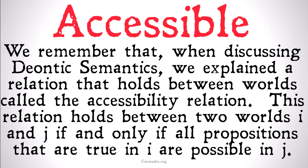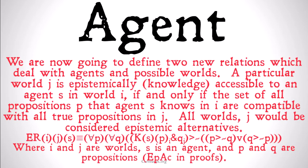For doxastic and epistemic modal logics, we're going to be looking at a very similar relation to help us define our semantics. It's going to be an agent-centered accessibility relation. We're now going to find two new relations which deal with agents and possible worlds. A particular world J is epistemically, or knowledge, accessible to an agent S in world I — so agent S is in world I, and some other world J is epistemically accessible to S — if and only if the set of all propositions that agent S knows in I are compatible with all true propositions in J. In other words, J would be considered an epistemic alternative world.